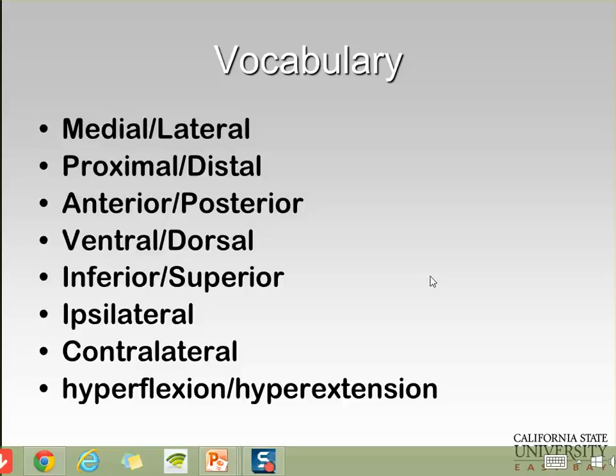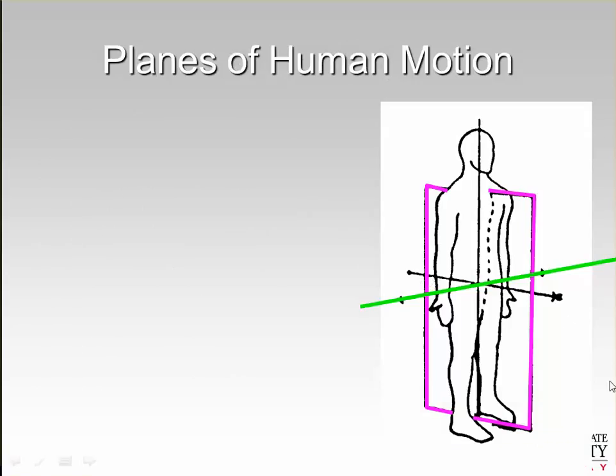Looking at planes of human motion, we can separate the body into three planes: X, Y, and Z. Our joints tend to move around axes which are perpendicular to those planes.